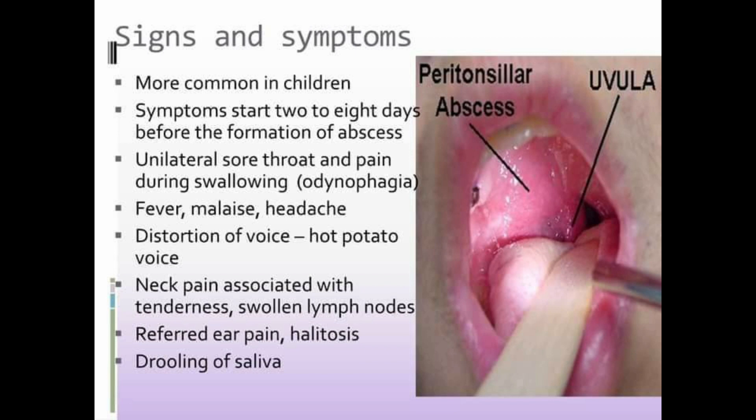Signs and symptoms of peritonsillar abscess: though it is very common in children, it can also occur in adults. Two to eight days before abscess formation, the patient will have unilateral sore throat, pain during swallowing (odynophagia), and fever. Headache and malaise will also be present. The patient will present with a muffled voice or hot potato voice as a result of edema of the pharynx and swelling around the peritonsillar region.